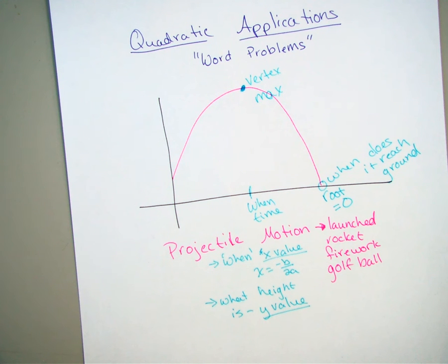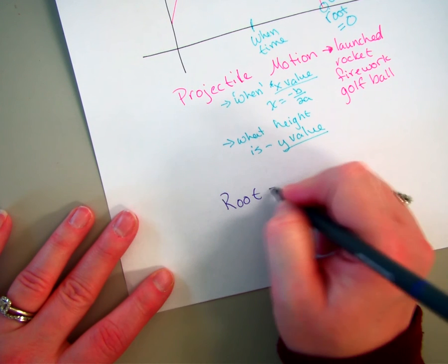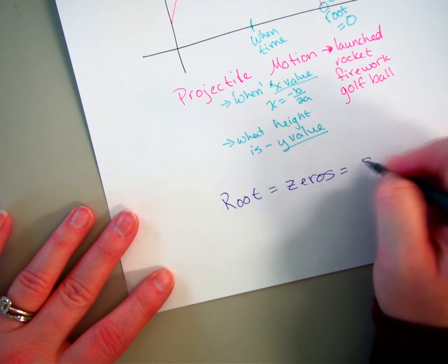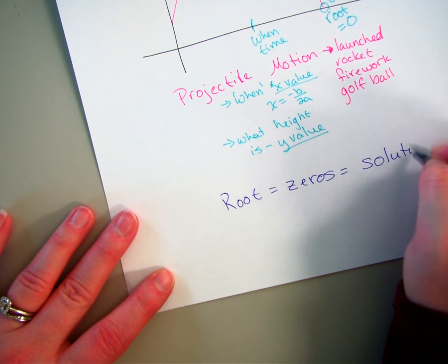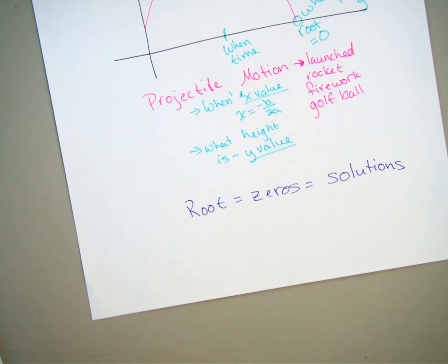Then there are other kinds of word problems that deal with our quadratics. And generally they are looking for the root. So remember, root is the same as the zeros, which is the same as the solution. So if it's asking you for the solutions, it means it's asking you for the roots or the zeros, which means you would just set the equation equal to zero and you would try to factor and solve. Factoring is not an option, completing the square, quadratic formula, square root method. You have lots of different options based on the kinds of equation that you have.